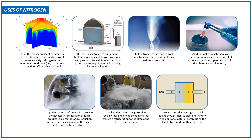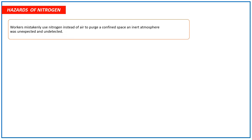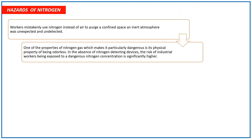Nitrogen is also used as an inert gas to push liquids through lines, to clear lines, and to sweep out one material before using the line to transport another material. What are the hazards of nitrogen? Workers mistakenly use nitrogen instead of air to purge a confined space, and an inert atmosphere was unexpected and undetected.